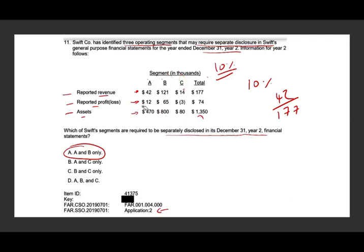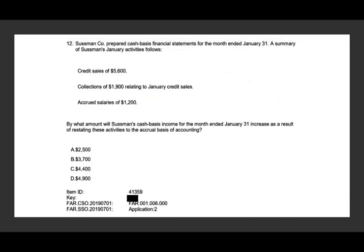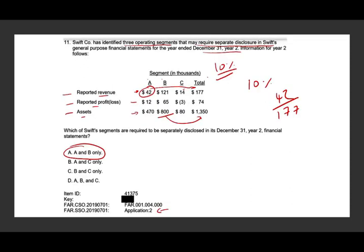On exam day, you should be able to quickly answer these questions. You need to know immediately that 42 divided by 177 is over 10%, and that 800 divided by 1,350 is also over 10%. Then real quick, you'd know that C's figures are less than 10%. Therefore A and B are reportable.